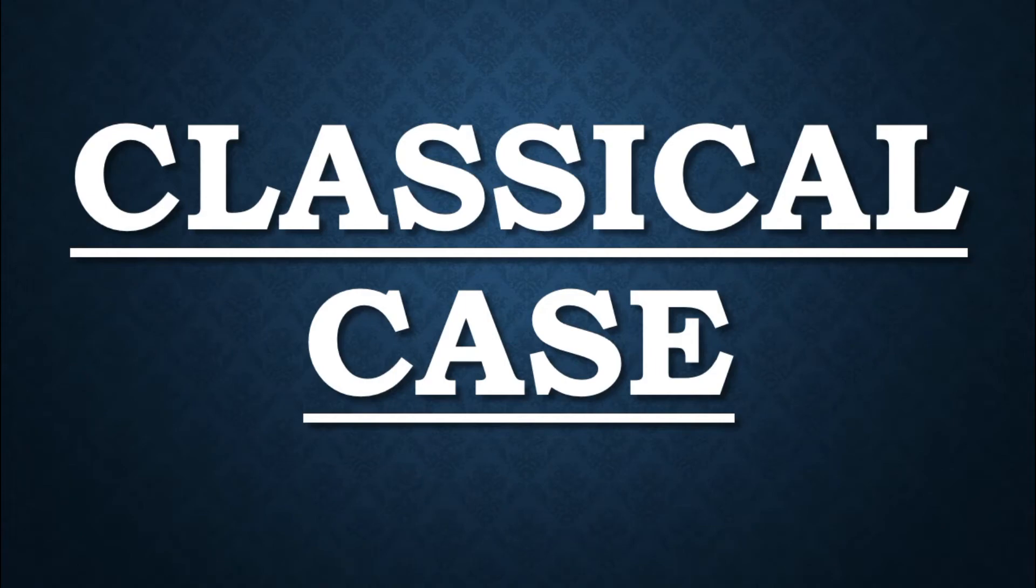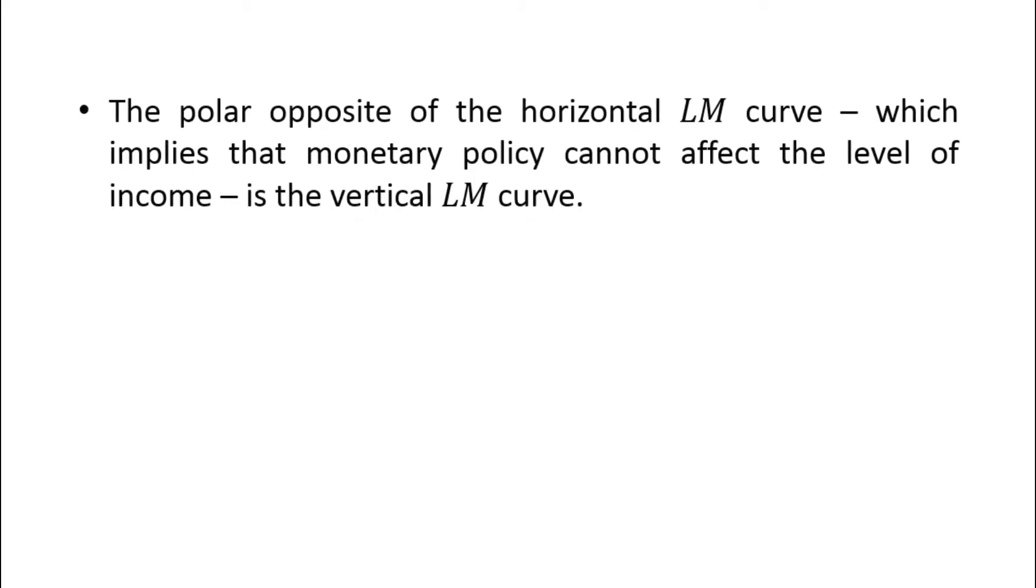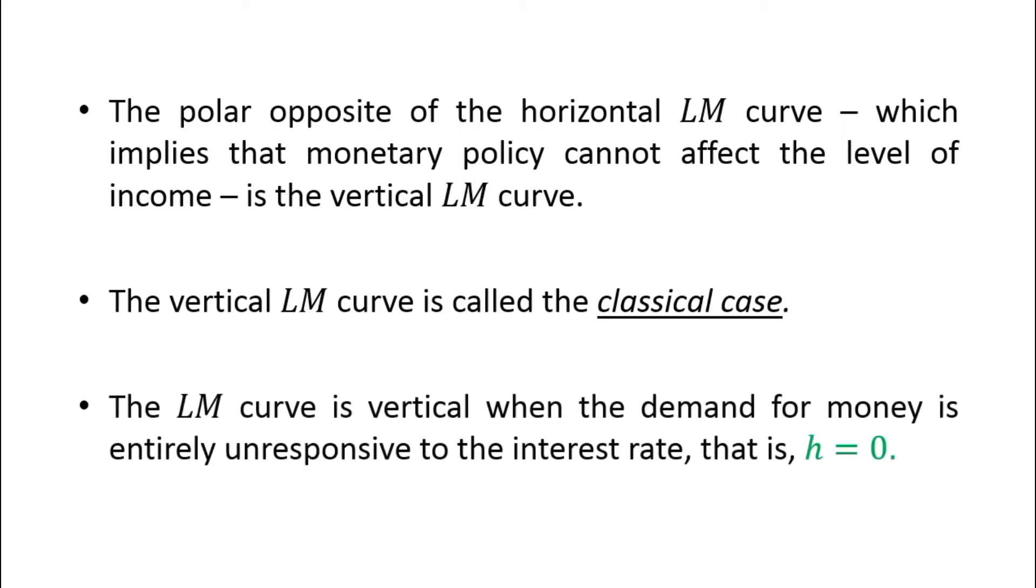Hello students, today's topic is the classical case. The polar opposite of the horizontal LM curve, which implies that monetary policy cannot affect the level of income, is the vertical LM curve. The vertical LM curve is called the classical case. The LM curve is vertical when the demand for money is entirely unresponsive to the interest rate, that is, h equals zero.